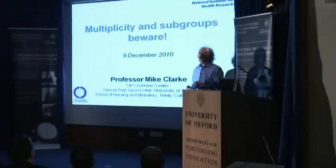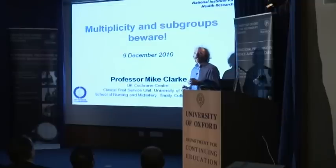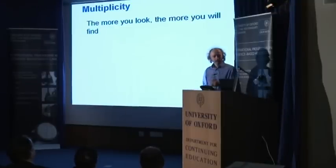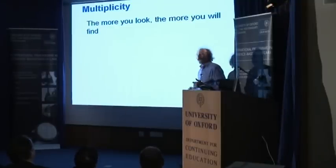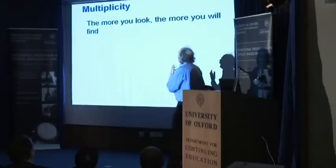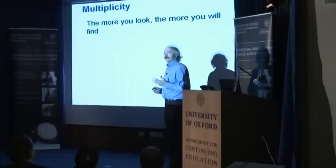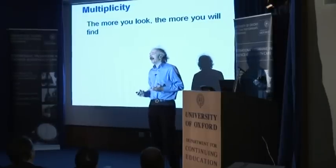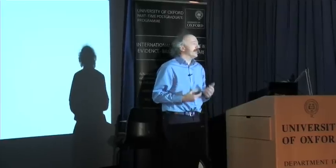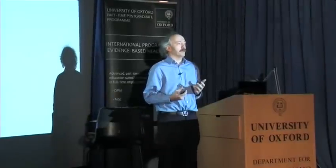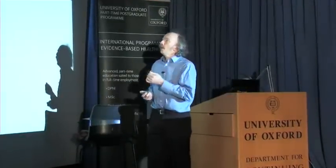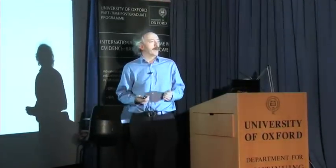So what can go wrong, why can it go wrong, how can we try and stop it from going wrong? The first point we have to think about is multiplicity. Multiplicity is about doing many analyses, looking at the data in many different ways. The more you look, the more you find.